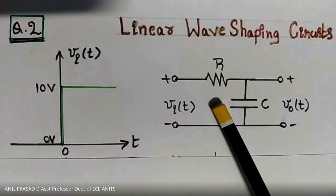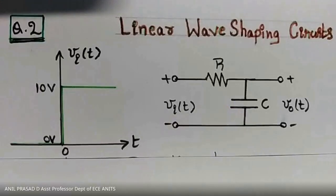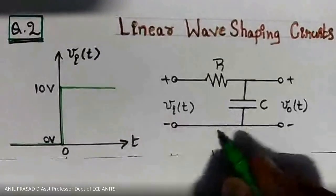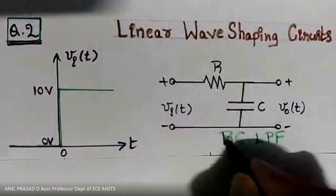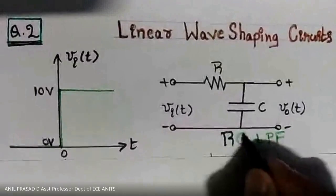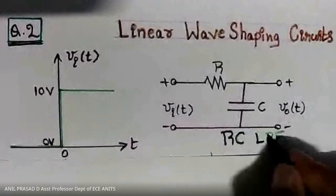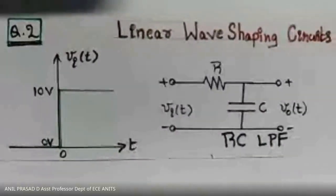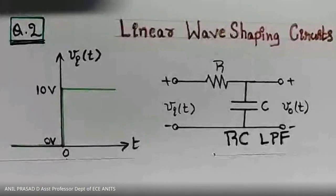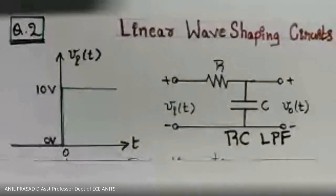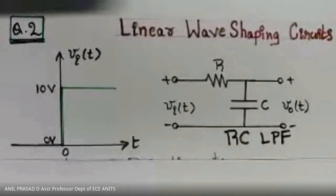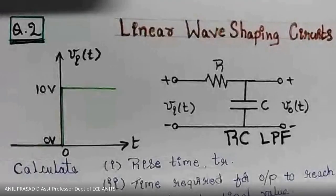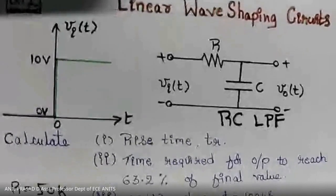This circuit is called the RC low-pass filter circuit. Given this RC low-pass filter circuit, you are asked to find the output for the given step input signal, along with answers to several additional questions.